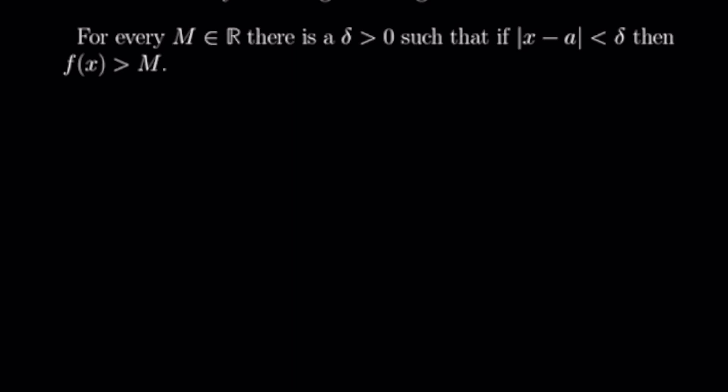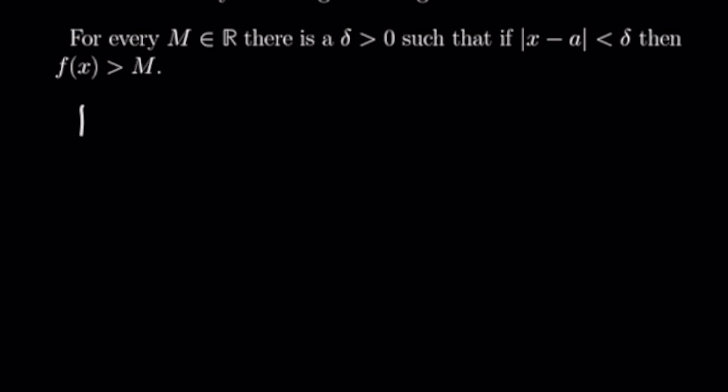This one says: for every real number m, there exists a delta greater than zero such that if the absolute value of x minus a is less than delta, then f of x is greater than m. This is actually the precise definition of the limit as x goes to a of f of x equals infinity — just a fun little thing to point out before we get into the negation.